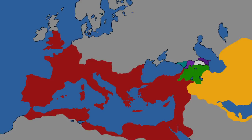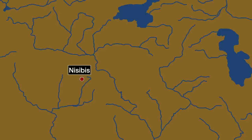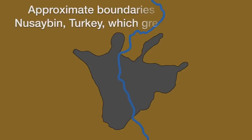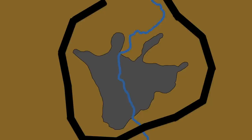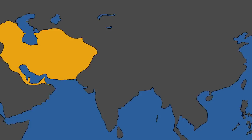In 350, the Persian Shah Shapur II laid siege to the Roman fortress and frontier town of Nisibus. This was the third time that he had directed his army to invest the town, and if one particular source can be believed, Shapur had the surrounding land flooded and attempted to assault the walls with ships. Eventually, however, he pulled back, and he did so in part to deal with a threat which had emerged from the northeast of his kingdom — the Kidarite, or Kidara, Huns.